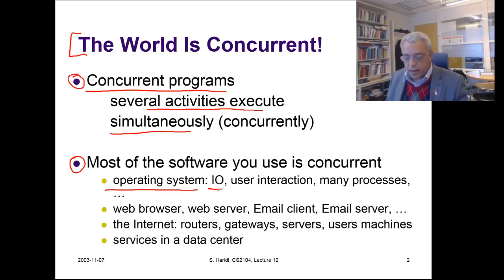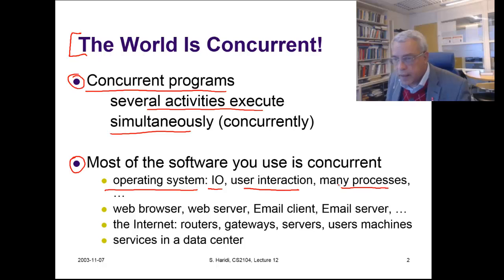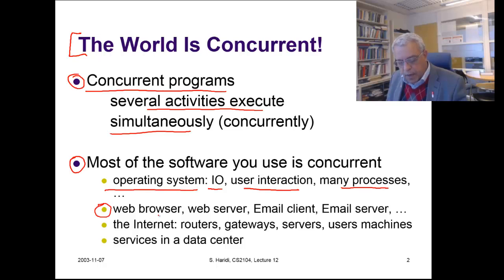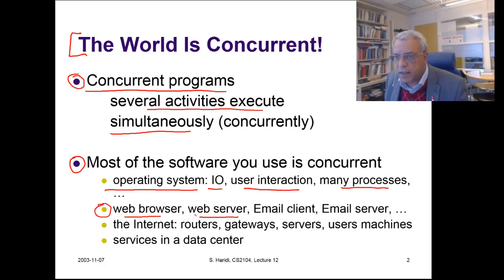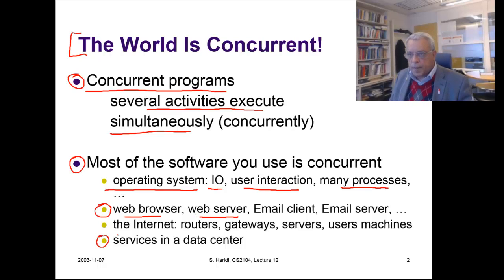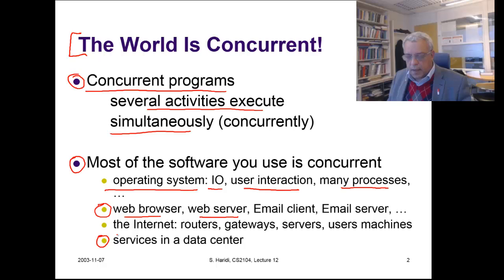These processes interact with the user, perform I/O operations, and there are many services that service the resources of your machine. The web browser is a concurrent process that communicates with a web server. The email client and the email server are other types of concurrent processes. Virtually everything is concurrent — the internet, the routers, the gateways, the servers, the user machines are all concurrent activities that communicate with each other. The services in data centers are also concurrent processes that serve user requests. A typical example is a search engine.